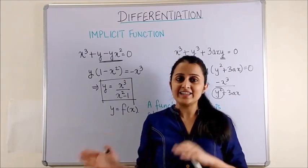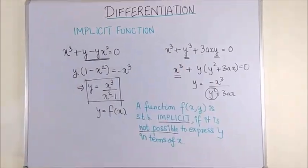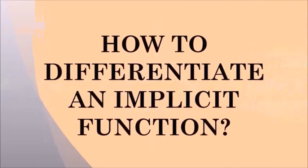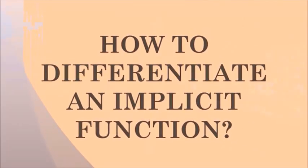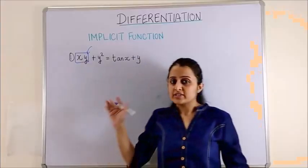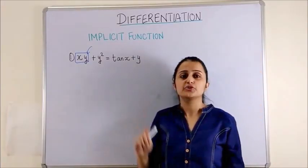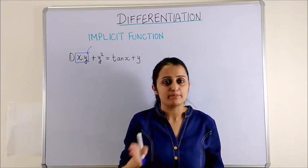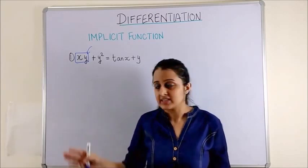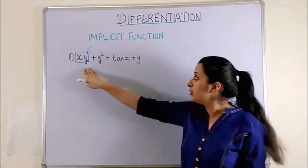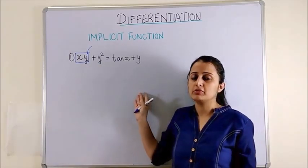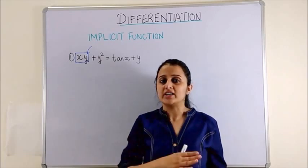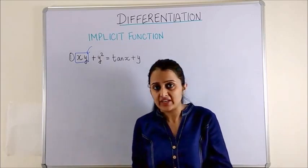Let's see that using an example. Suppose you are given this function to be differentiated with respect to x. You know this is an implicit function because you cannot express one variable in terms of the other.